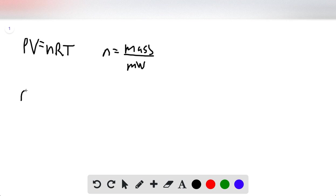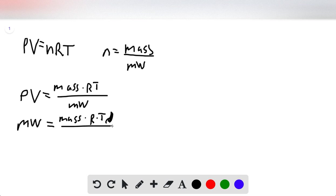Then we can rearrange this equation so that PV equals mass times RT over molecular weight, and solve for molecular weight such that it equals mass times RT over PV.